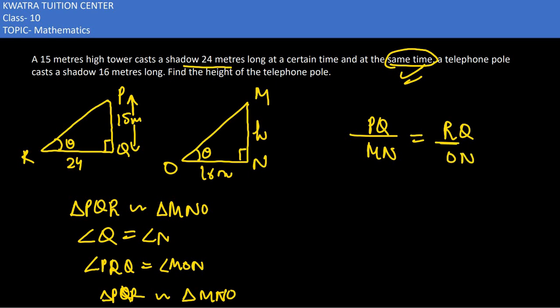Now we can substitute: PQ value is 15, MN value is h, RQ is 24, and ON is 16.